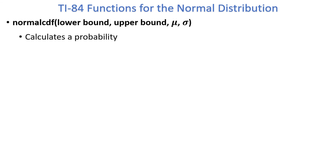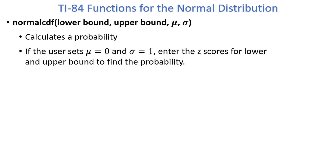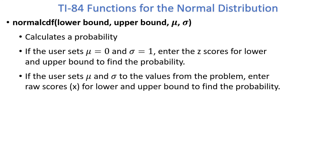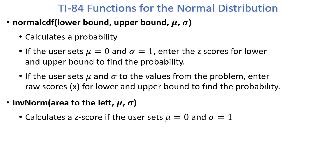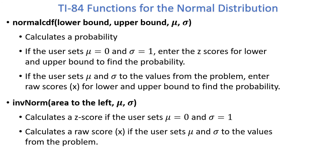Just to be clear, let's briefly review the calculator functions. NormalCDF calculates probability, and takes the arguments lower bound, upper bound, mu, and sigma. If the user sets mu equals 0 and sigma equals 1, enter z-scores for the lower and upper bound to find the probability. If the user sets mu and sigma to the values from the problem, enter raw scores x for the lower and upper bound. Inverse norm calculates a z-score or a raw score x, with arguments area to the left, mu, and sigma. A z-score is calculated if the user sets the mean to 0 and standard deviation to 1; a raw score is calculated if the user sets mu and sigma to the values from the problem. We have finished our discussion of normal probabilities using the TI calculator, so make sure to check out our other videos.